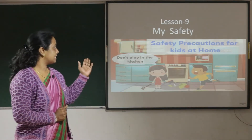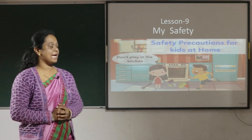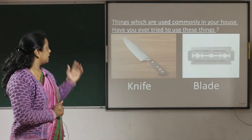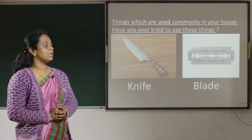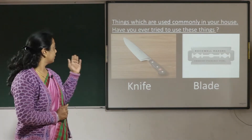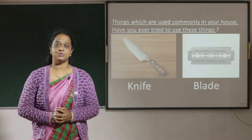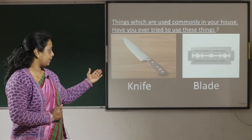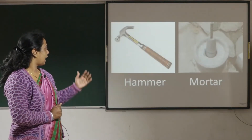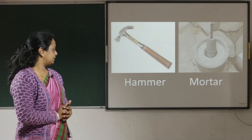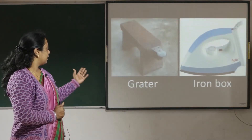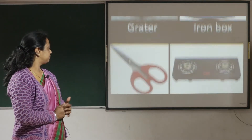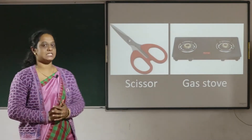Children, now let's see safety precautions for kids at home. These are things which are used commonly in your house. Have you ever tried to use these things, children? Like knife, blade, hammer, mortar, grater, iron box, scissor, and gas stove.